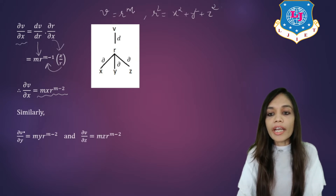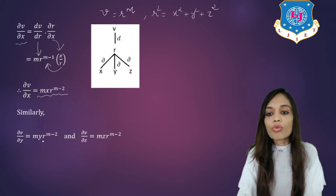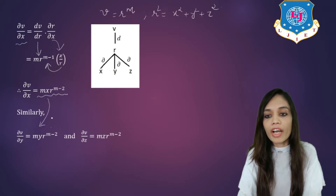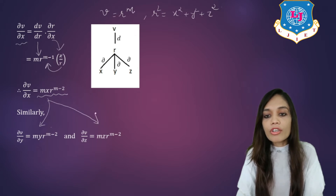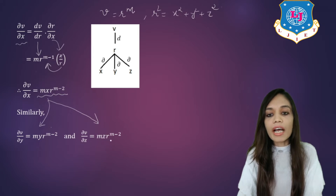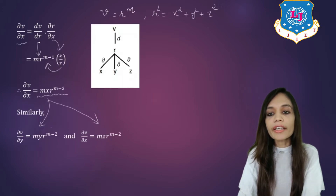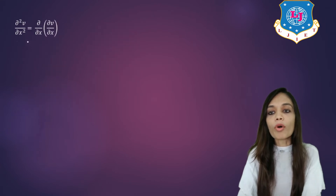Similarly, del v by del y is equal to m into y into r raise to m minus 2, and del v by del z is equal to m into z into r raise to m minus 2. Now let us find del square v upon del x square, which is equal to del by del x of del v by del x. Substituting the value of del v by del x, which is m into x into r raise to m minus 2.